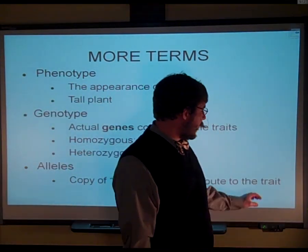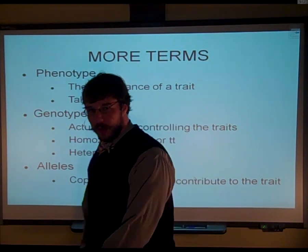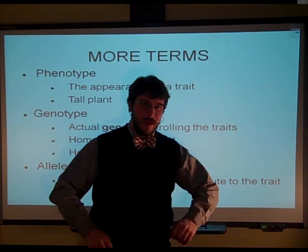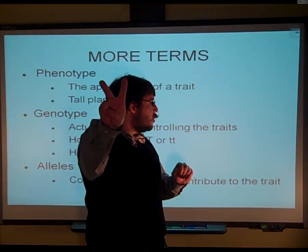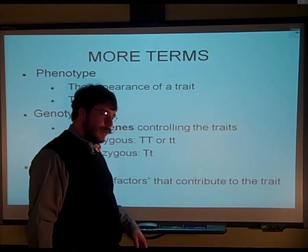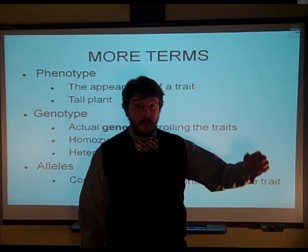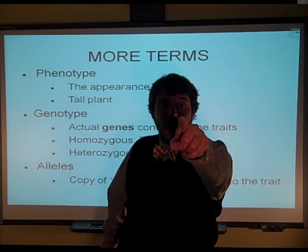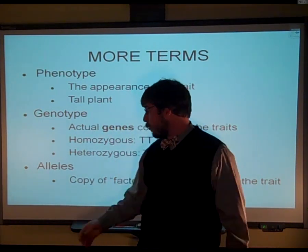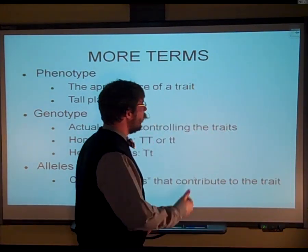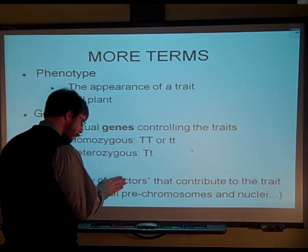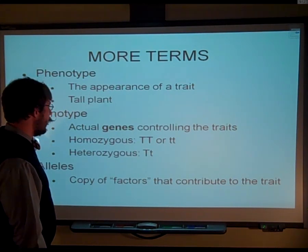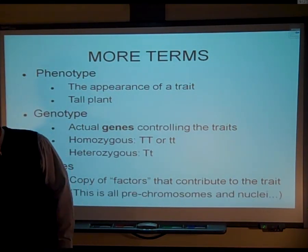The alleles are the copies of those factors. Mendel determined that for those autosomal pea plant traits, each trait always has two copies — which makes sense because you get one set of chromosomes from your mother and one from your father, so you have two copies of every gene. We call those copies the alleles, and you can have dominant or recessive alleles. Keep in mind, this is all pre-chromosomes, pre-nucleus knowledge — pretty crazy.